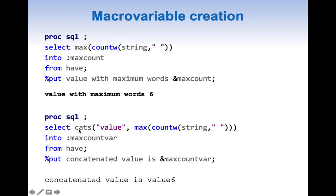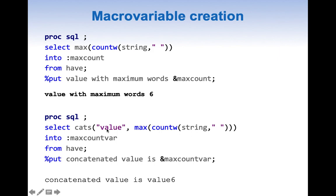Whenever we create a macro variable, we can also add more text to our value by using the CATS function. Here I am concatenating the word value with the number six. Finally I am using the %PUT statement and getting the value six as my macro variable value. To summarize: macro variable creation can be done using an INTO clause, and we can append additional values using CATS function — in this case it results in the value six.